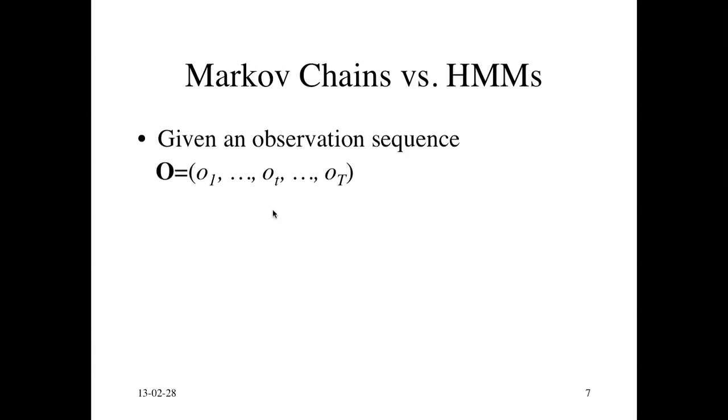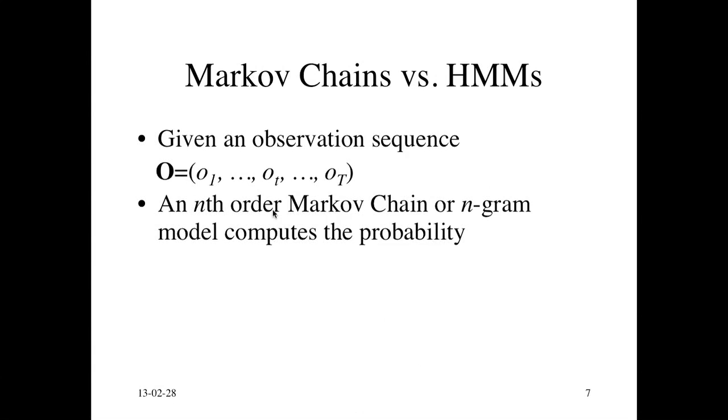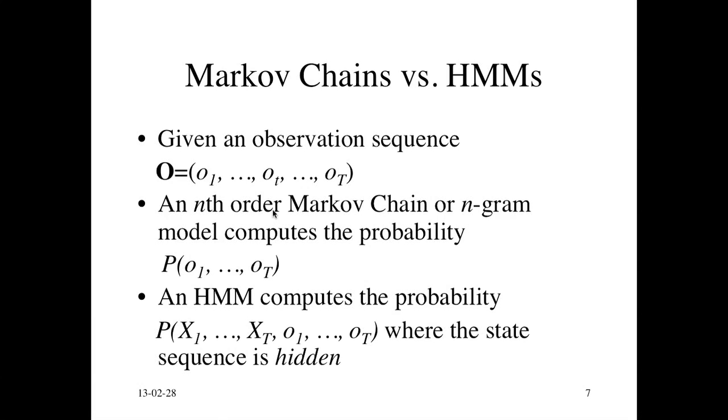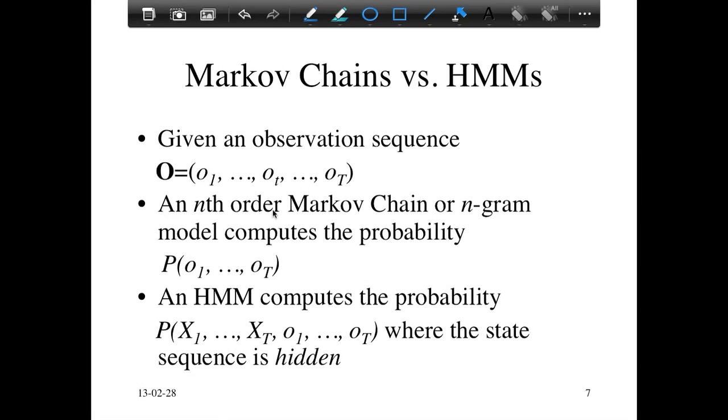So given an observation sequence, nth order Markov chain or n-gram model computes this probability. It's just a probability of the sequence using the Markov assumption. And the HMM actually computes this probability. There is a sequence of states associated with each observation. And this state sequence is hidden. So the main difference between the HMM and the n-gram model is this extra bit here, which the HMM uses to generate the observation sequence.